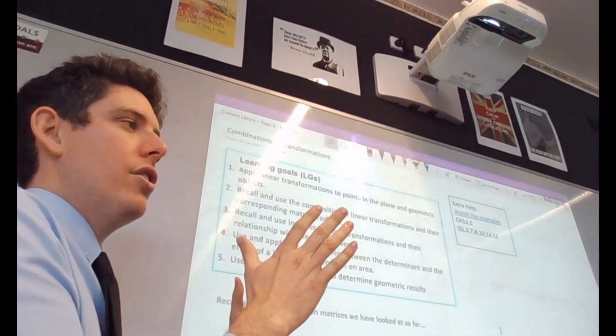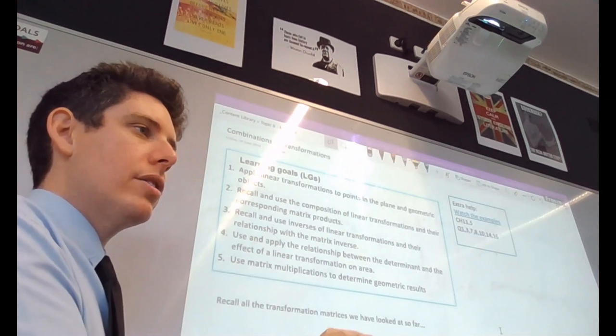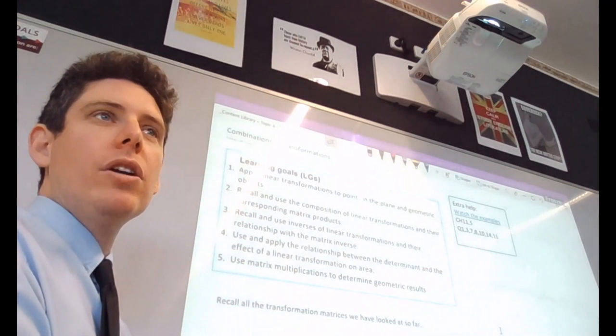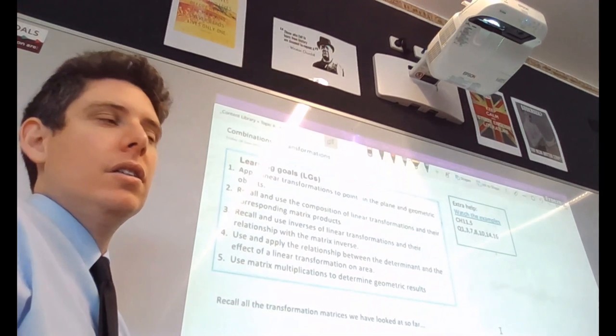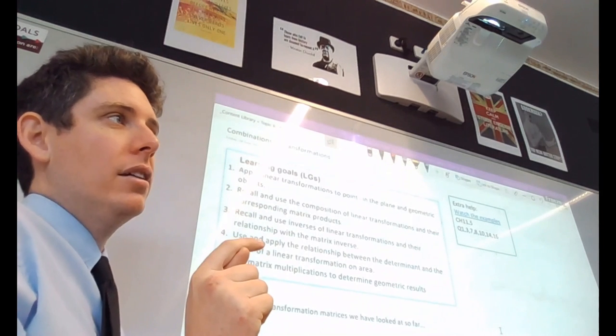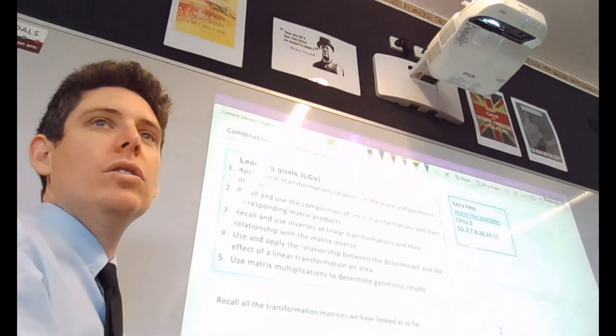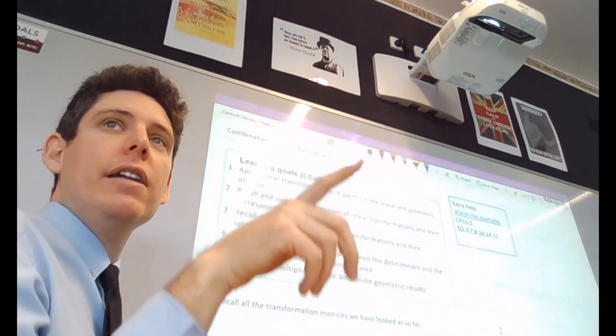So far we've just done, we've got a point, we're going to reflect it across an axis, or we've got a point, we're going to rotate it. What we're going to do today is we're going to reflect it and then we're going to dilate it. So we're going to do two things or three things or four things.